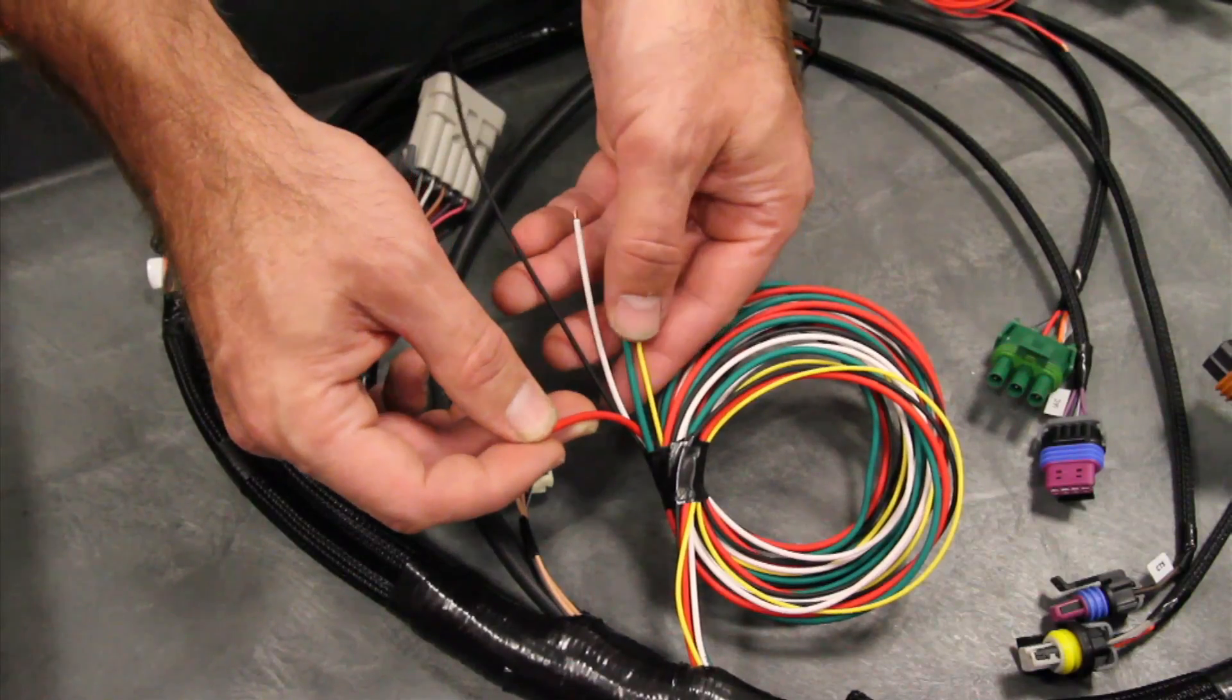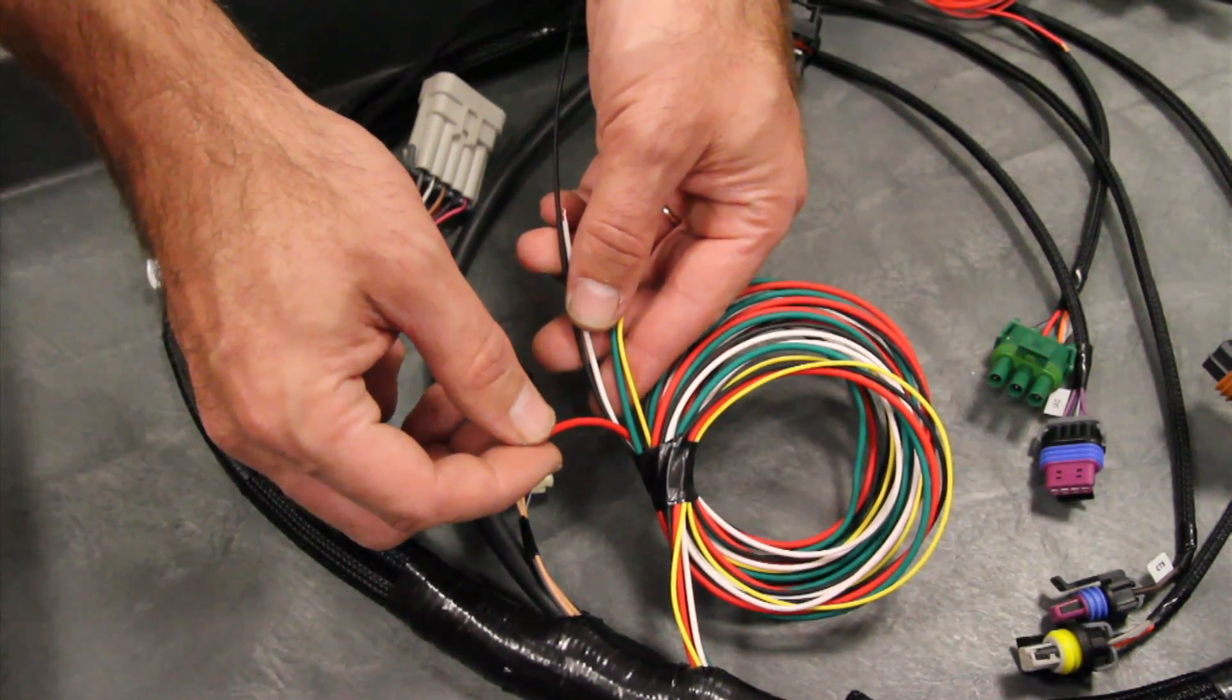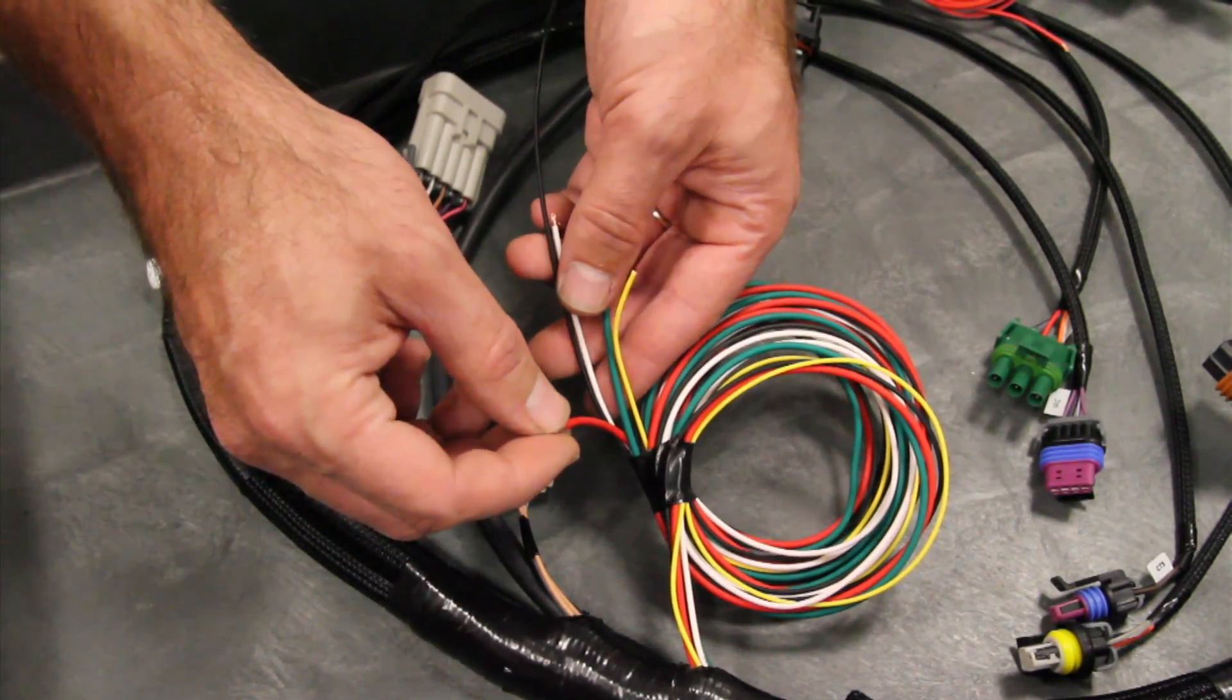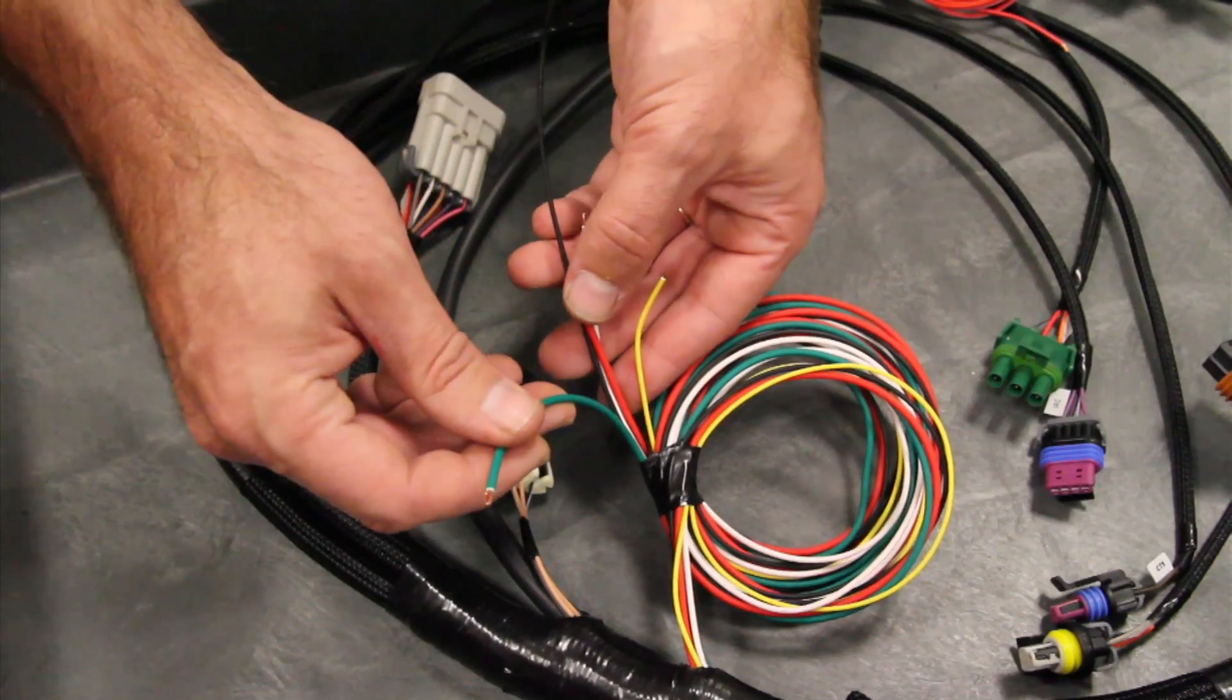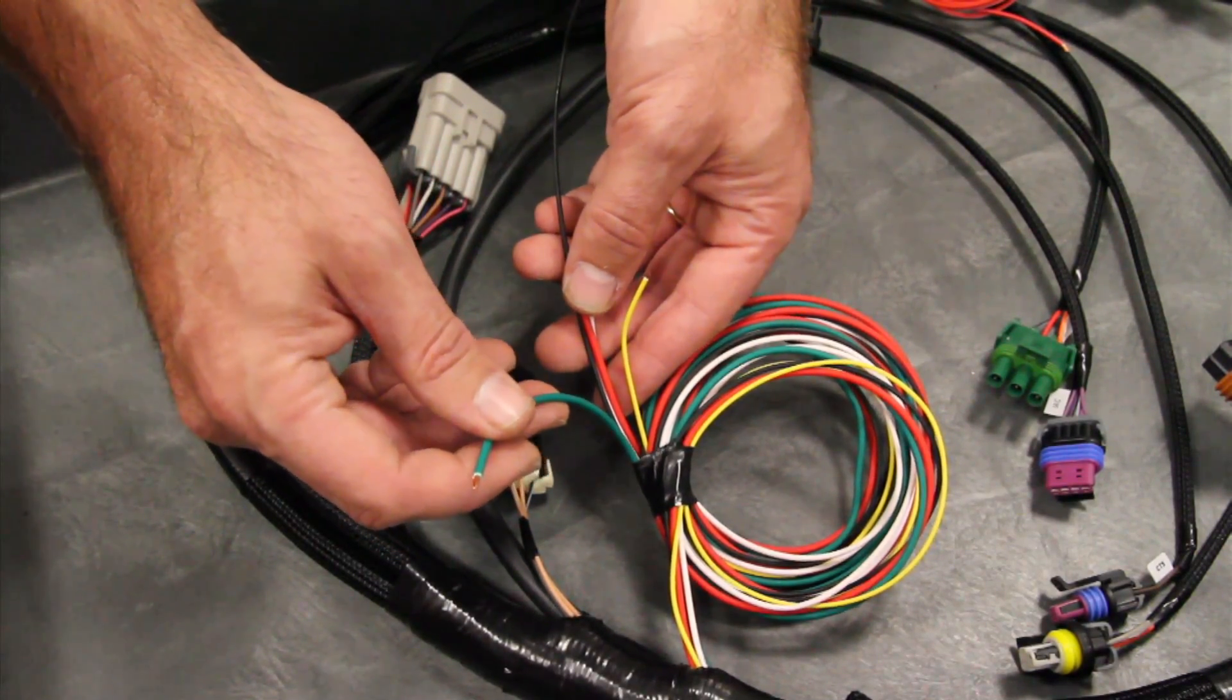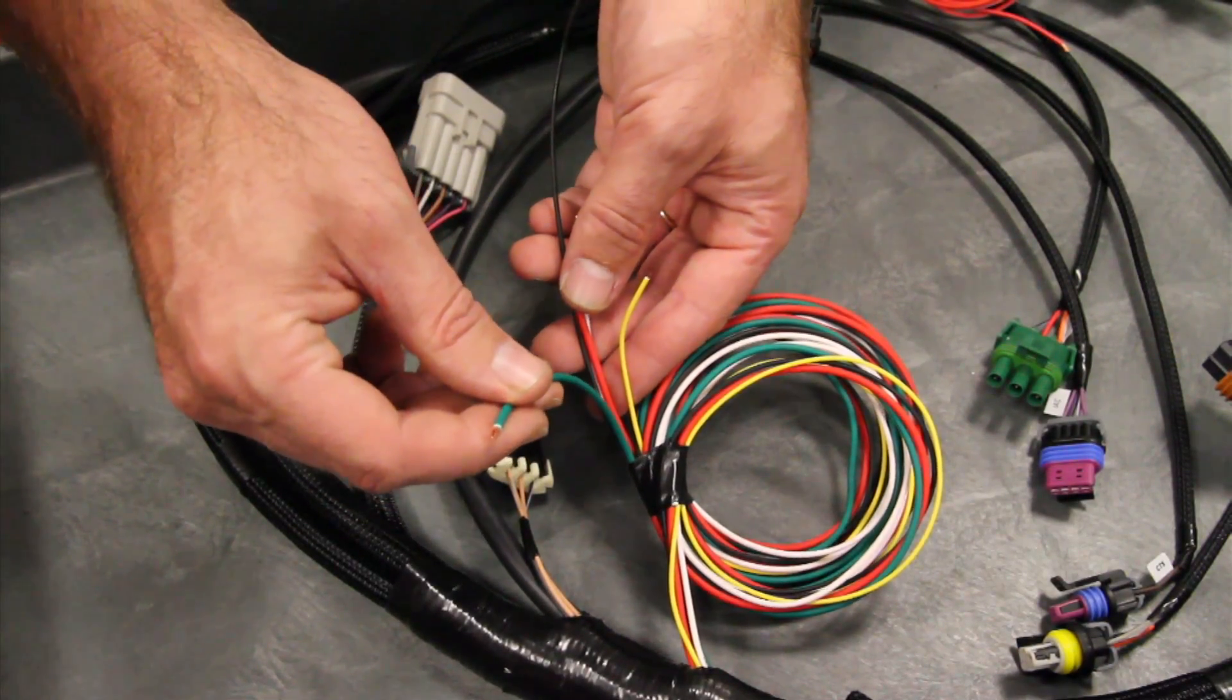This red wire is a battery power source that feeds the relay for the fuel injectors and fuel pump. This can go to the battery or a source for a constant 12 volt feed. This green wire is the 12 volt wire that goes to the fuel pump. If you have a fuel pump that takes less than 10 amps, you can directly use this wire to power the fuel pump.